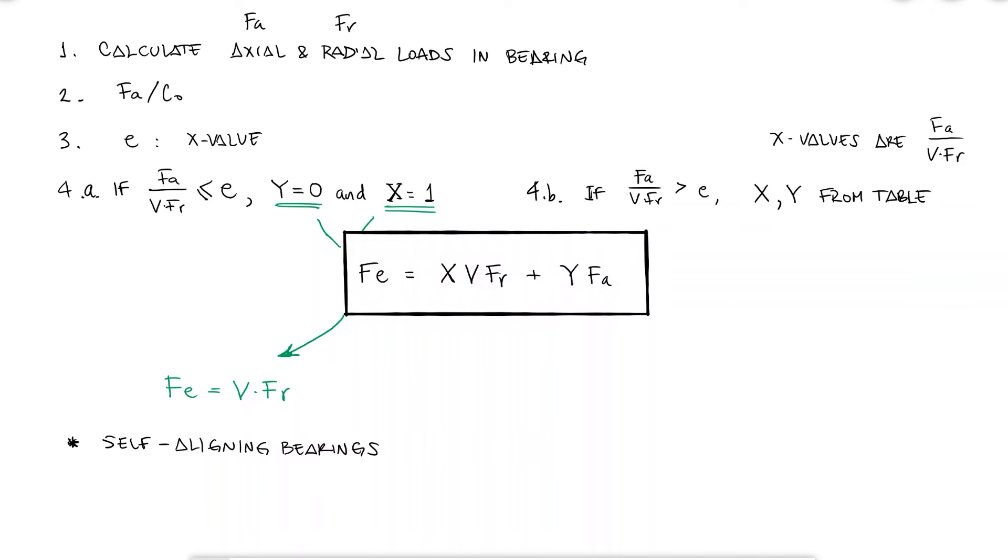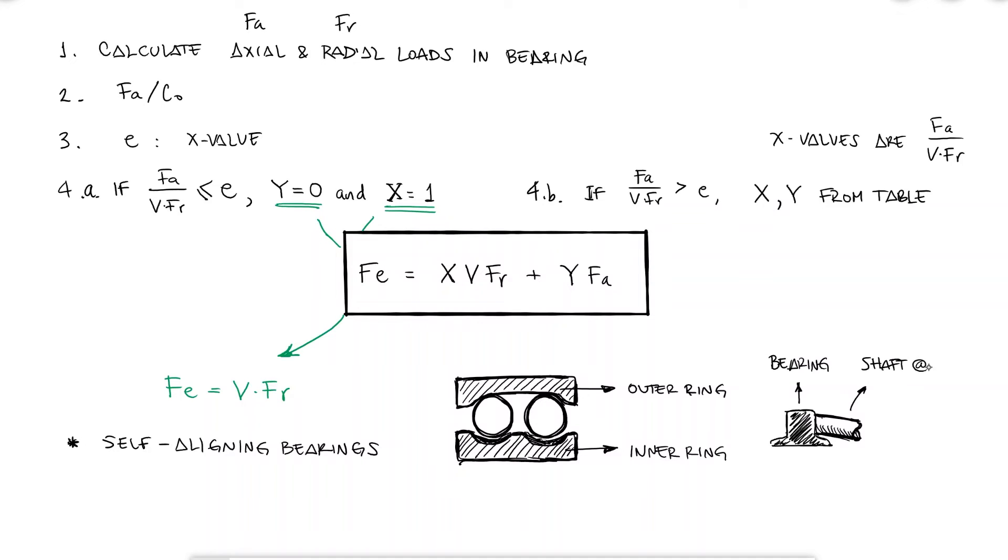For self-aligning bearings, which are a kind of bearing that has two rows of balls with one track on the outer ring and two tracks on the inner ring and can therefore still allow rotation of the shaft even when it's at an angle, the rotation factor V is always 1, even for the outer ring.